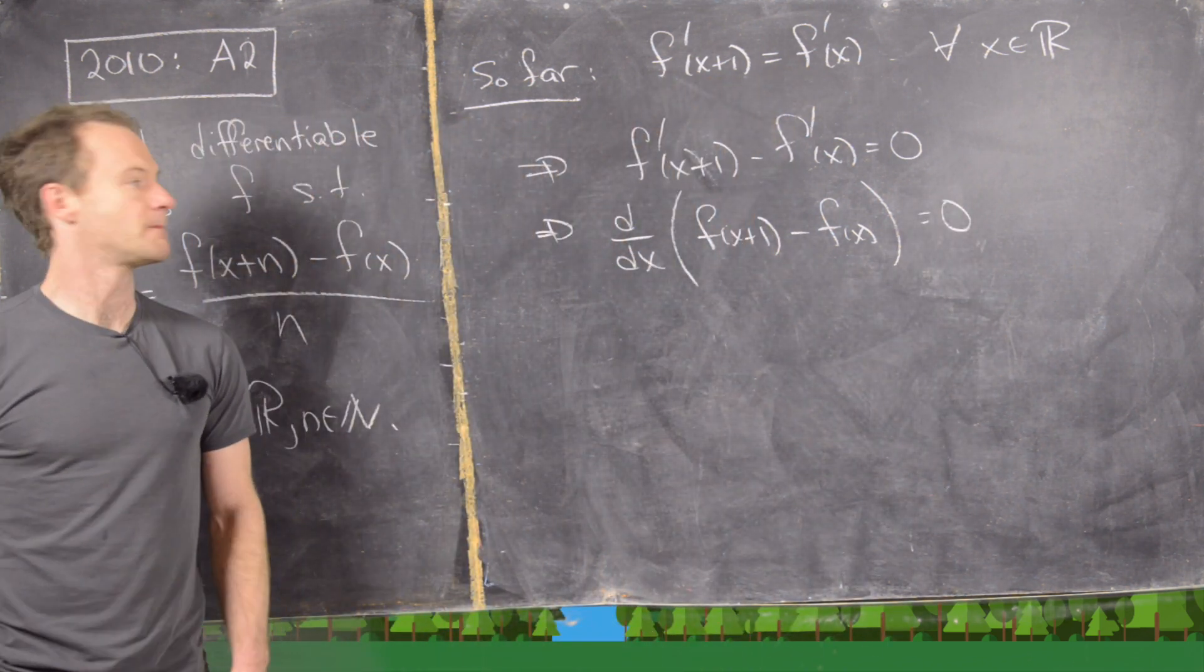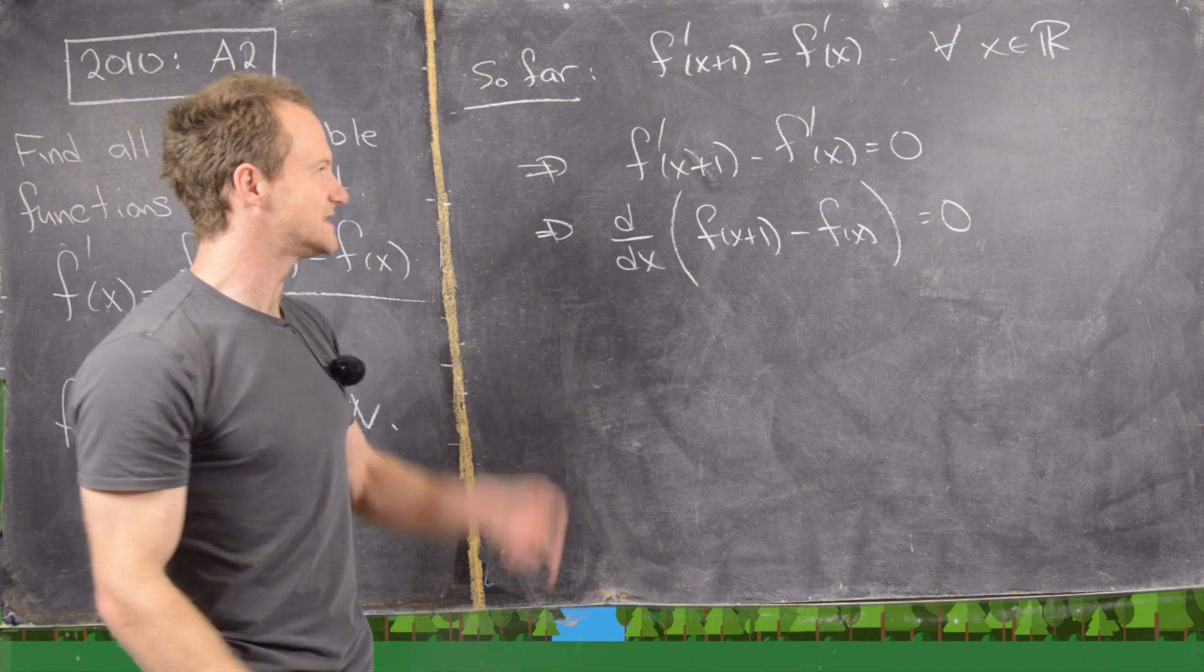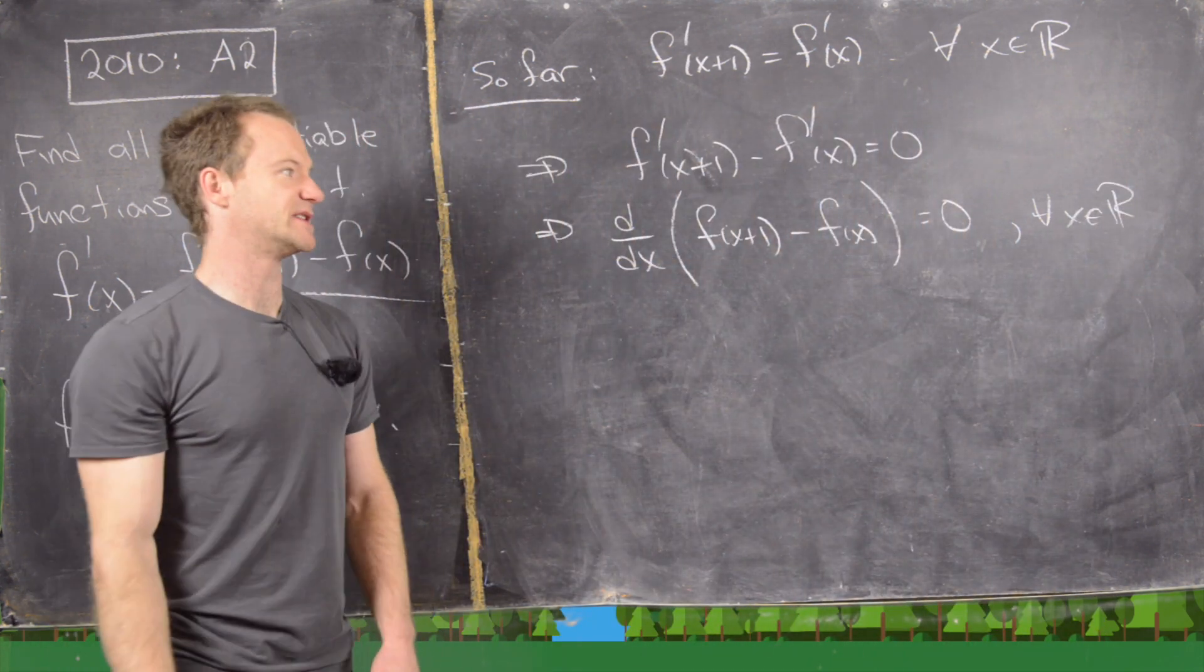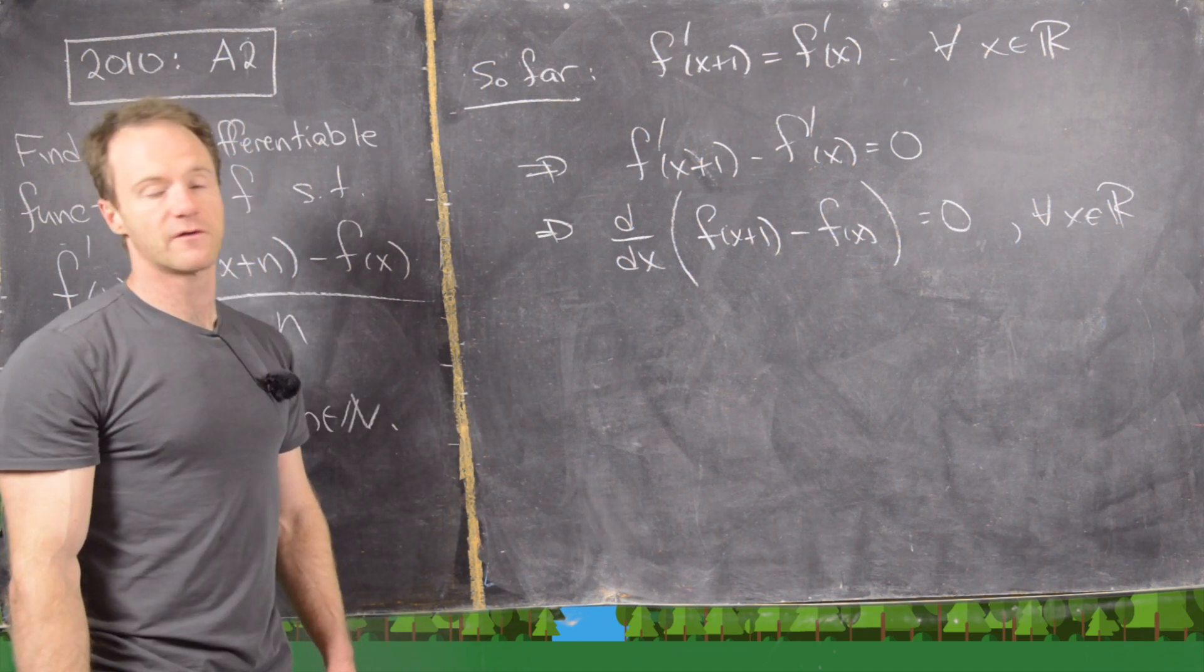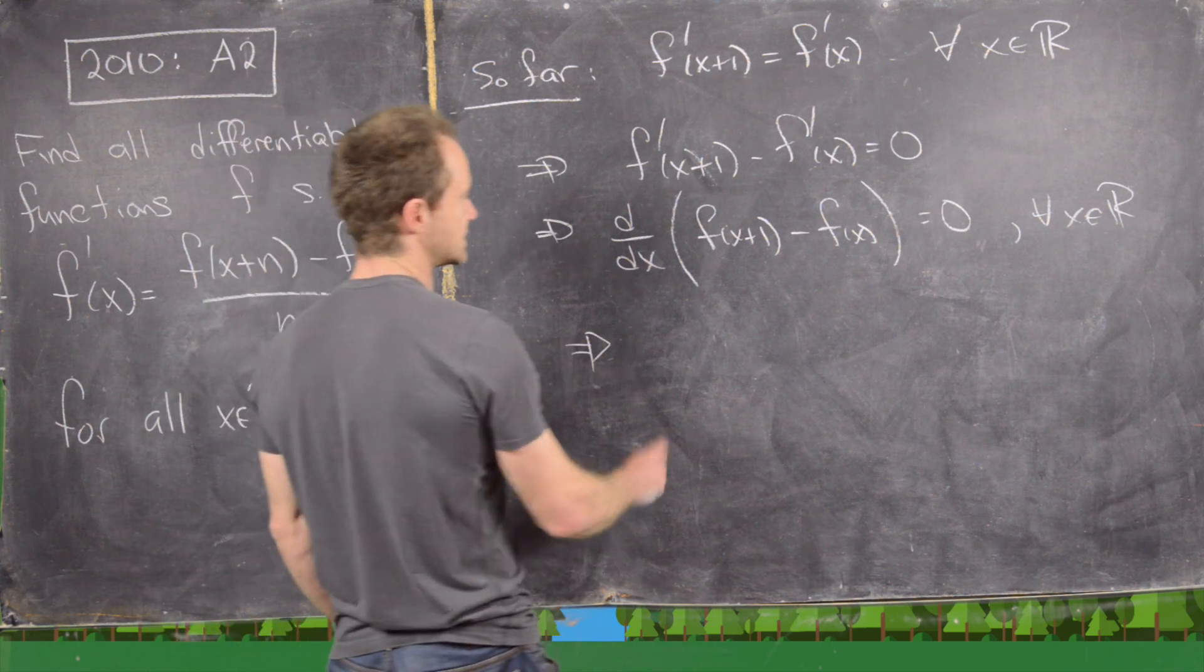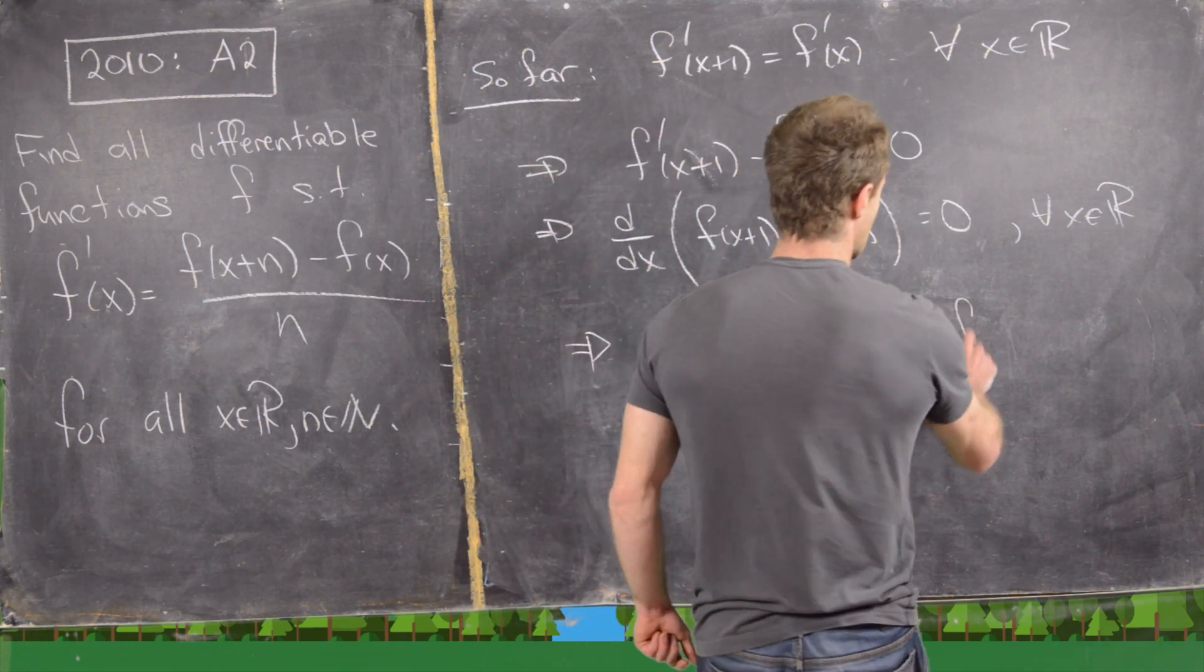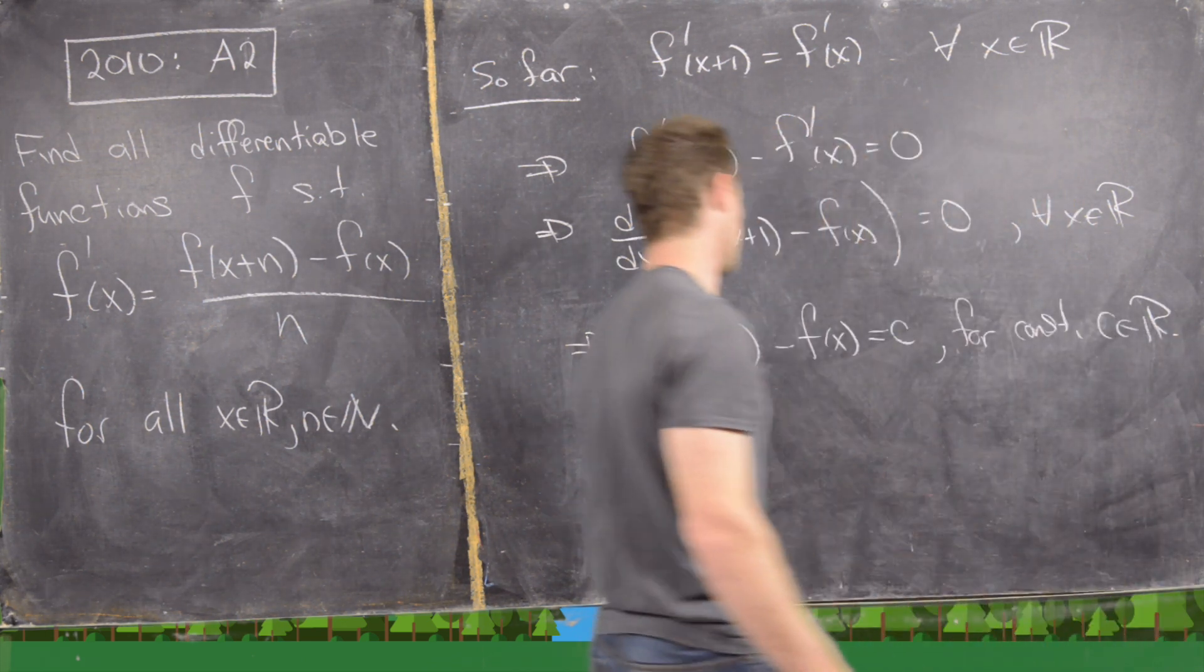But the only type of function that is identically 0 - remember that this is 0 for all x in R, the derivative of this function is 0 for all x in R - and the only type of function that is 0 for all x in R is a constant function. So in other words, we have f(x+1) minus f(x) equals c for a constant c, which is a real number.